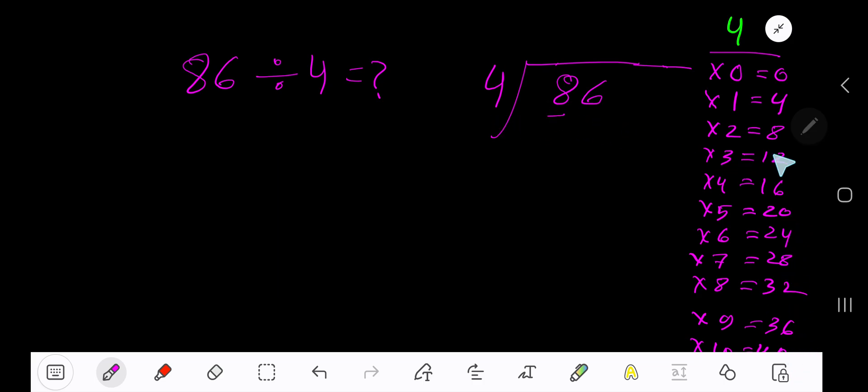4 goes into 8 how many times? 4 goes into 8 2 times. Write 2. So 2 times 4 gives you 8. Subtract, 0. Bring down the next digit.